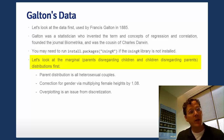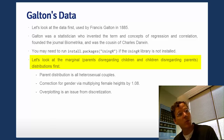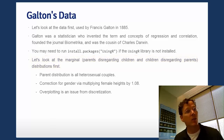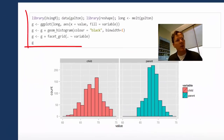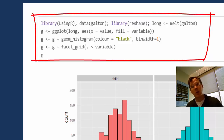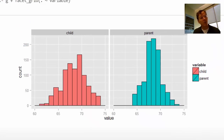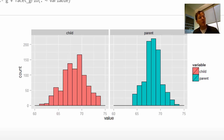Let's first look at the marginal distribution of the parents — that is, the distribution of parents disregarding children — and the marginal distribution of the children disregarding parents. The parent distribution covers all heterosexual couples, correcting for sex by multiplying female heights by 1.08. Here I give my ggplot commands for creating two histograms: on the left, the children's height with the x-axis in inches from 60 to 75 and y-axis showing count; on the right in a bluish teal color, the parents' heights.